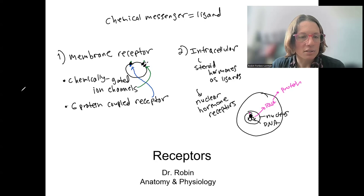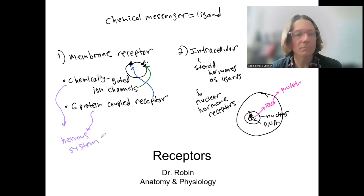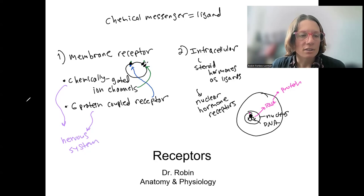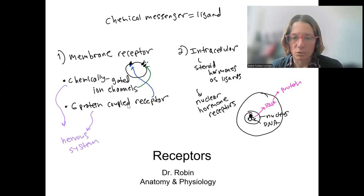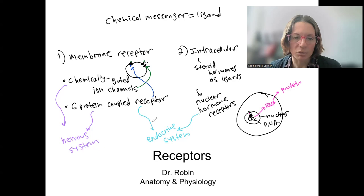The nervous system is going to use chemically gated ion channels and G-protein coupled receptors in its signaling. The endocrine system is going to use steroid hormones with nuclear receptors, as well as G-protein coupled receptors.